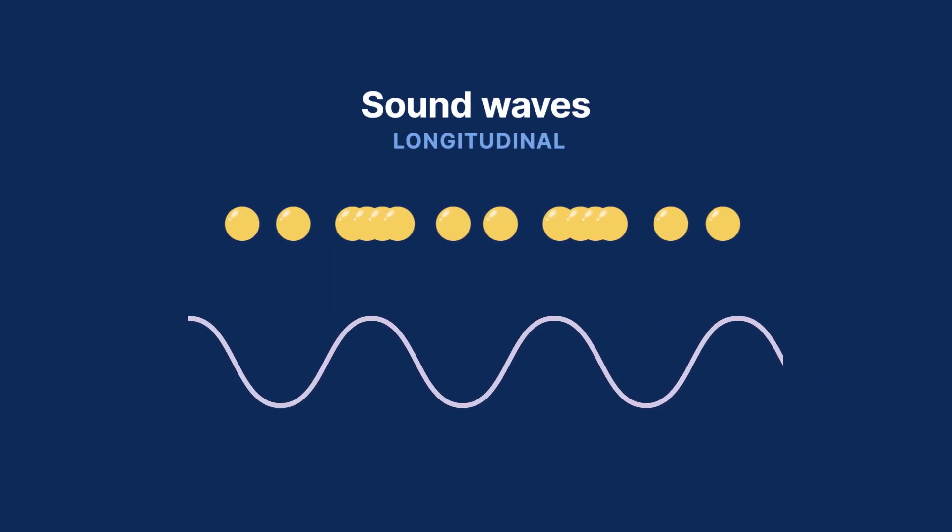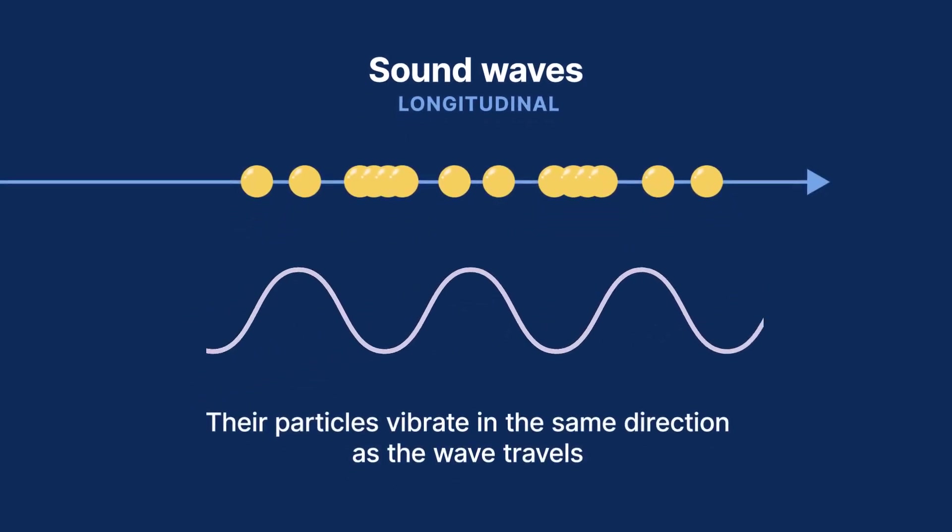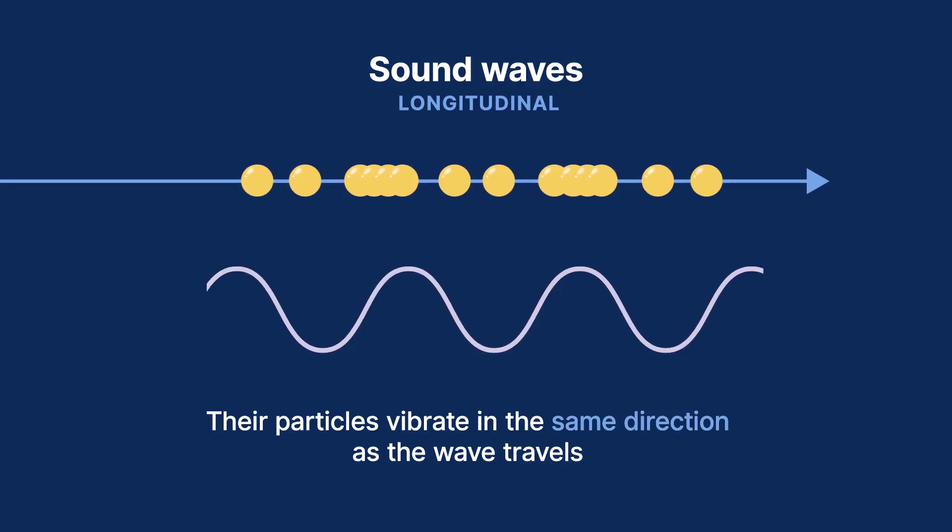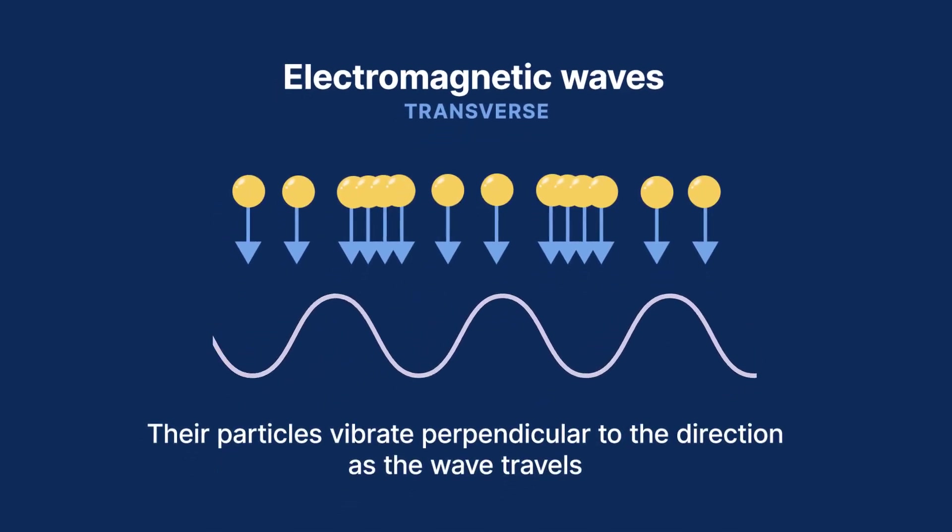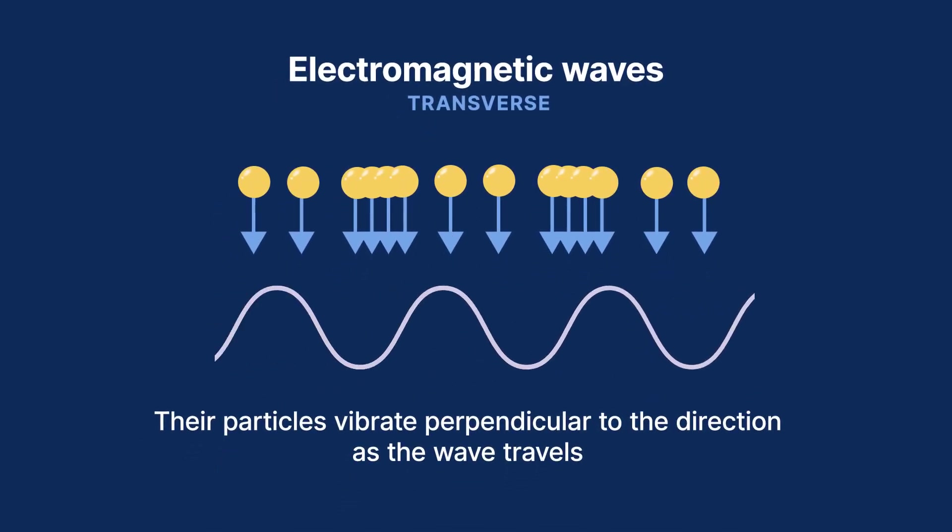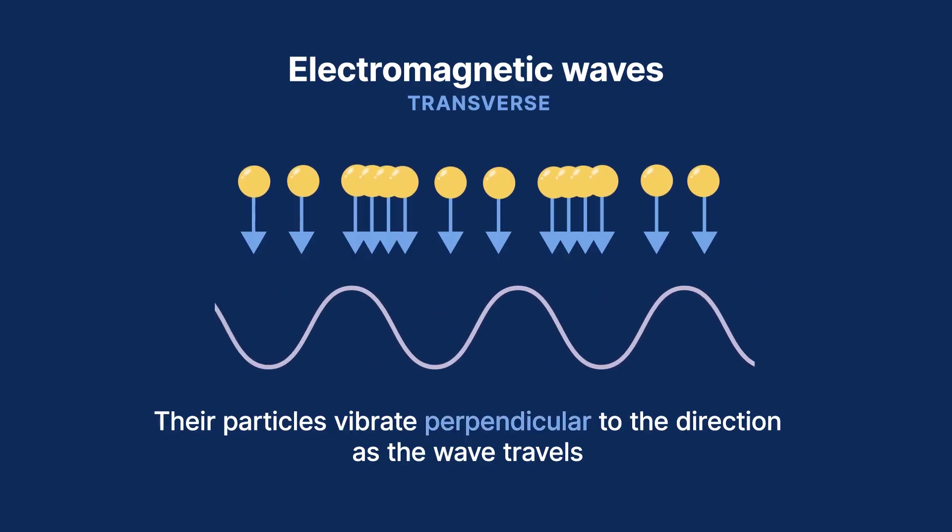Next, let's look at how sound waves differ from electromagnetic waves. First, it is important to note that sound waves are longitudinal waves. This means their particles vibrate in the same direction as the wave travels. However, electromagnetic waves, like light and x-rays, are transverse waves. This means that the particles in these electromagnetic waves travel perpendicular to the direction the wave is traveling.